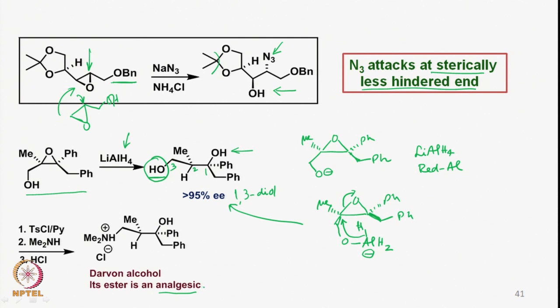The primary alcohol can be tosylated to convert it into a tosylate as a leaving group. Then the nucleophile from dimethylamine replaces it and we can do hydrochloride formation. This is what is called Darwon alcohol, which is an analgesic when its ester is used. We have a simple way of getting optically pure Darwon alcohol from the epoxy alcohol made from a molecule having a double bond, carrying out epoxidation according to the asymmetric Sharpless method followed by regioselective ring opening of the epoxy alcohol with lithium aluminum hydride.